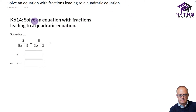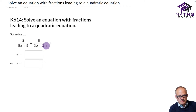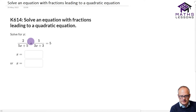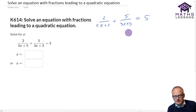We're going to be looking at solving an equation with fractions that leads to a quadratic equation today. Here's our fractions - you've got a linear term on the bottom here and a linear term on the bottom here, and if they're not the same thing then you're going to get a quadratic. So let's start off by writing this question out: 2 over 5x plus 5, plus 5 over 3x plus 3. It's always a good idea to write out the original question when you start doing your working.